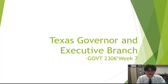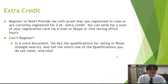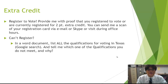The first thing is your extra credit for this week. Your extra credit is to register to vote. I want you to register to vote and provide me with proof that you registered, or that you are currently registered. This is worth two points of extra credit. You can send me a scan of your registration card or application through email, video chat me on Skype, or visit during my office hours and present the card or application.